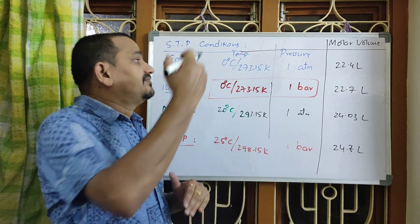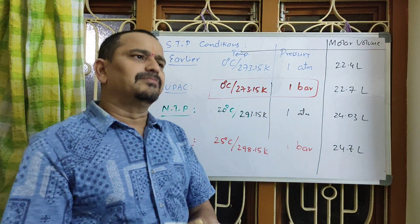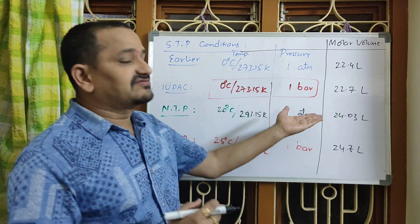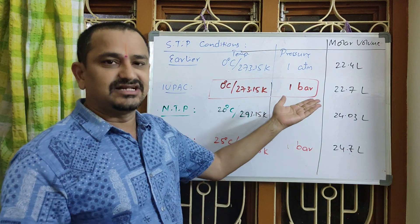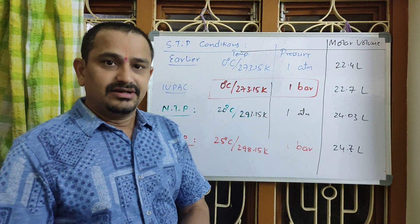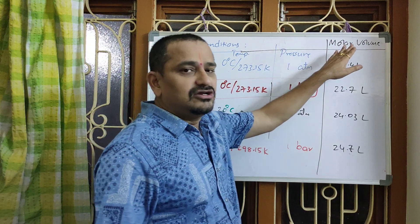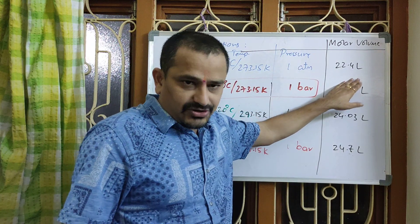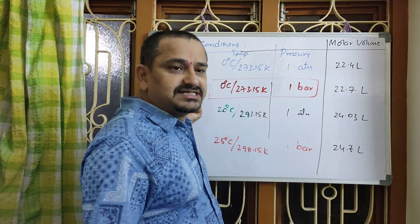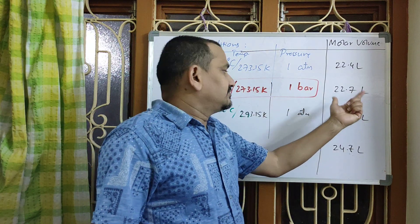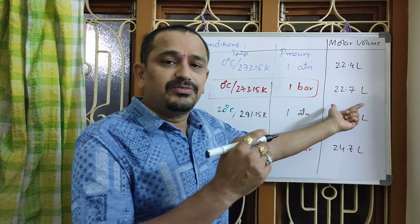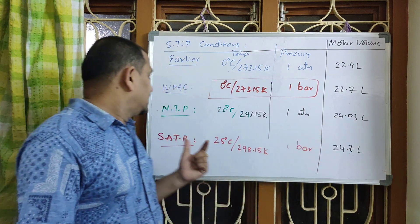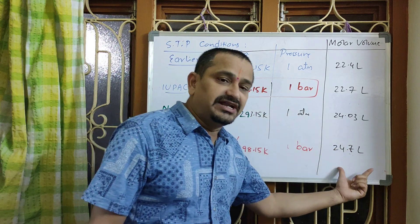Molar volume means volume occupied by 1 mole of any substance at STP. At old STP conditions, molar volume is 22.4 liters. At new STP conditions given by IUPAC, it is 22.7 liters. NTP volume is 24.03 liters. And standard ambient temperature and pressure volume is 24.7 liters.